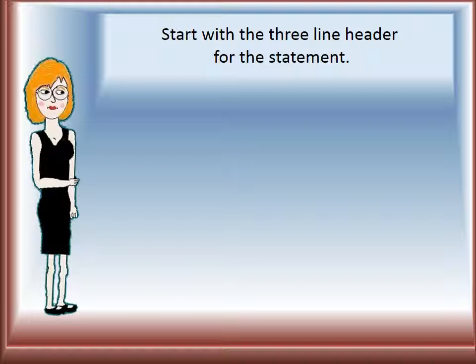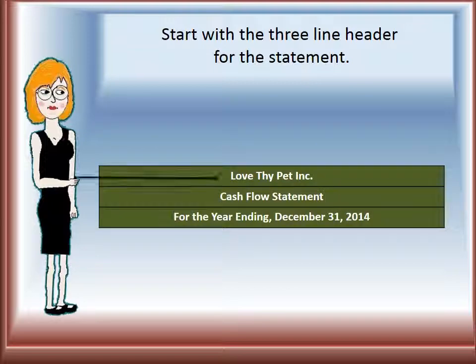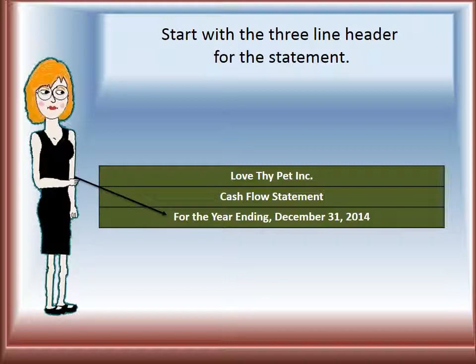Let's start with the three-line header from the statement: name of the company, title of the statement, and period for which the statement covers. The name of the company is Love Thy Pet Inc., the title of the statement is cash flow statement, and the period for which it covers is for the year ending December 31, 2014.